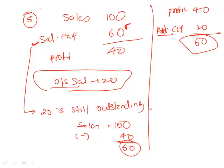To clarify: salary expense was 60 but we paid only 40 in cash. Cash reduces by 40 and the remaining 20 becomes an outstanding liability. So if we know the current liability increased by 20, it means we did not pay that amount in cash, which means we add it back. That is why an increase in current liability is added in the working capital section.